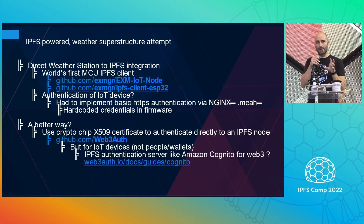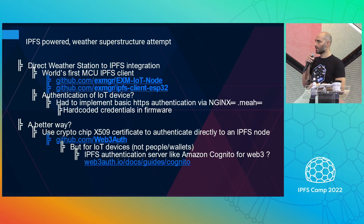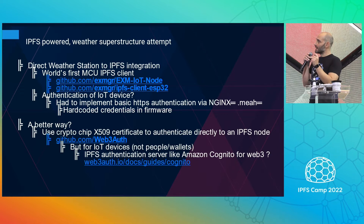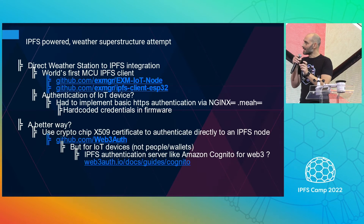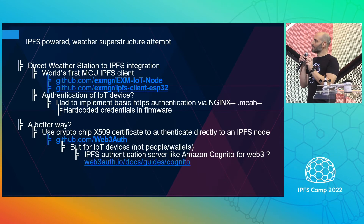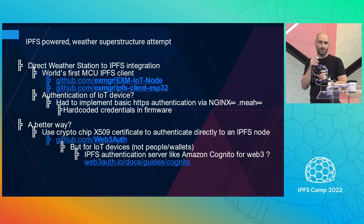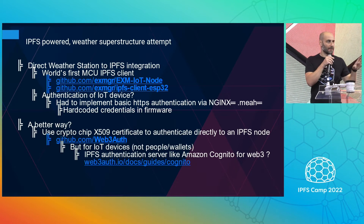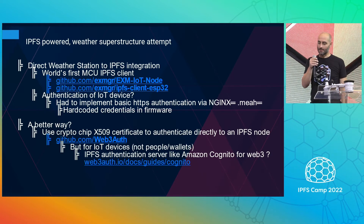In my point of view, it would be great if we could directly use the X.509 certificate that we have in the hardware to authenticate directly to an IPFS node. I think the closest thing that exists towards this direction is WebAuthn. What's missing is something like an Amazon Cognito for Web3. If anybody is working towards this direction, I'd be happy to talk. We have four people here from the team — please find us.